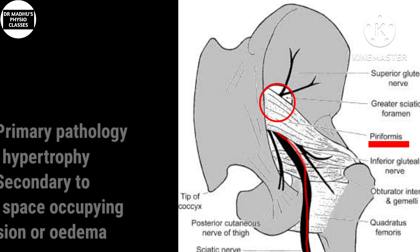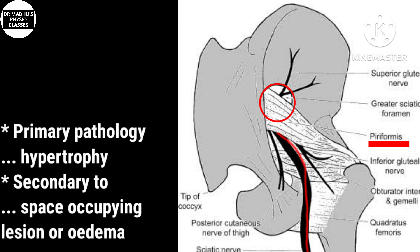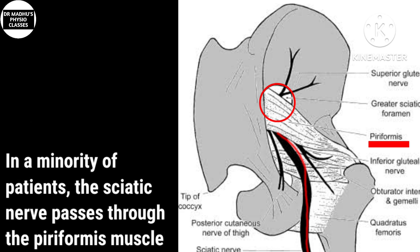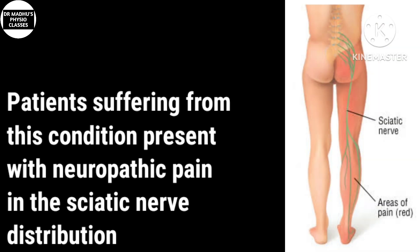This can be due to intrinsic piriformis muscle pathology, such as hypertrophy of the muscle. Or it can be due to other pathologies at the greater sciatic foramen level — for example, space-occupying lesions or edema due to sacroiliitis. In some patients, the sciatic nerve passes through the piriformis muscle itself, which can also lead to entrapment of the sciatic nerve. As a result of sciatic nerve involvement, there can be neuropathic pain in the leg and the buttock.